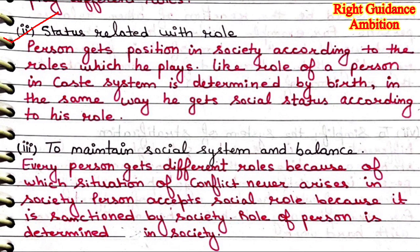Second point is: status is related with role. A person gets a position in society according to the role which they play. If your role is that you are a country's Prime Minister, obviously you will get a respectable position in society. Like the role of a person in the caste system is determined by birth, in the same way they get social status according to their role. If you are a big businessman, you will have a lot of money and according to your status, you will be a rich and influential person.